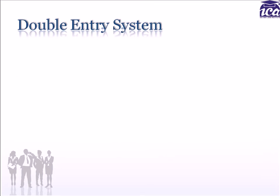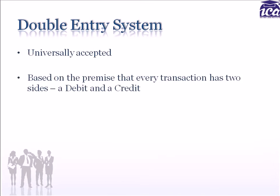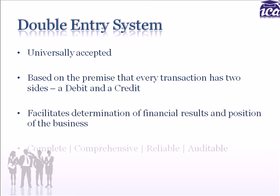On the other hand, the double entry system is the universally accepted system of accounting and is followed by most organizations across the world. It is based on the premise that all transactions are classified into accounts and every transaction has two sides — a debit side and a credit side. The accounts maintained under the double entry system facilitate determination of financial results and the financial position of the business. The system is complete, comprehensive, reliable, and auditors accept this system for providing an audit opinion.